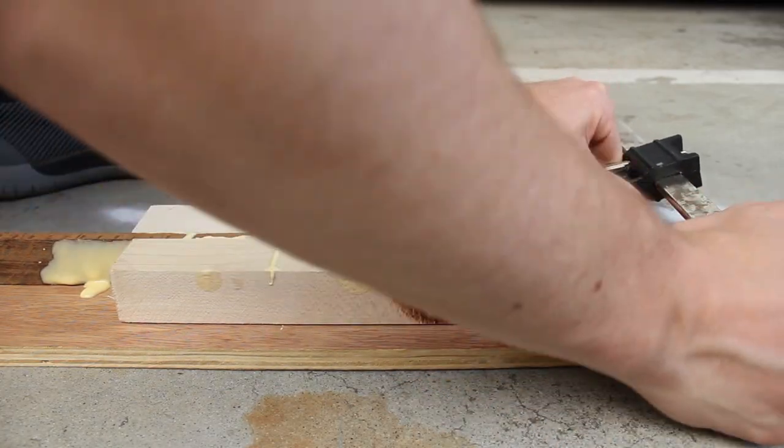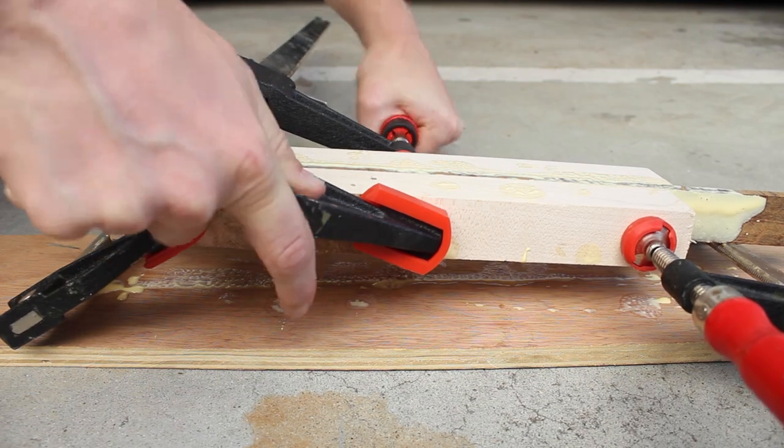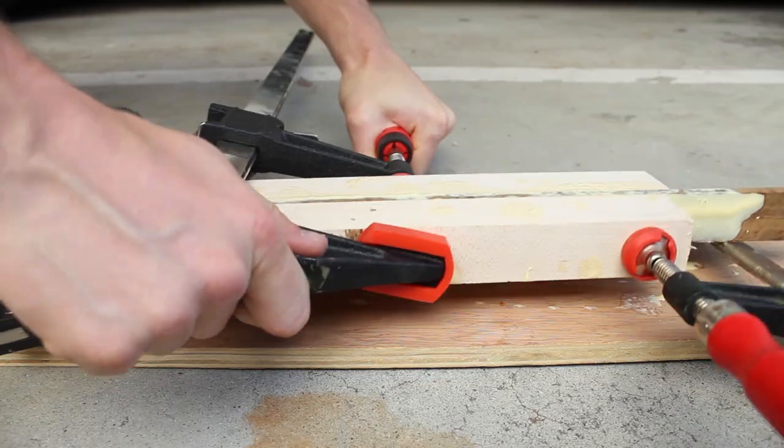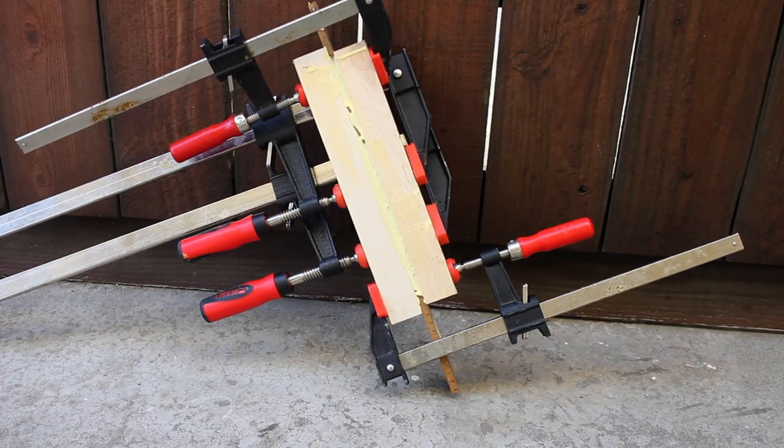Now I thought that a cool way to make a box would be in the same vein that you make an end grain cutting board, laminate a few strips together to form a larger piece, then plane them down, cut them up, and then glue them together again to form a block. So I went and did that.